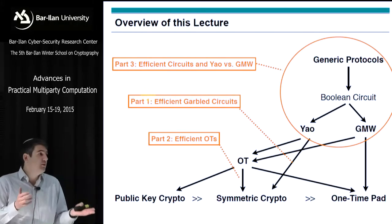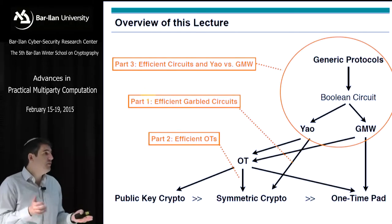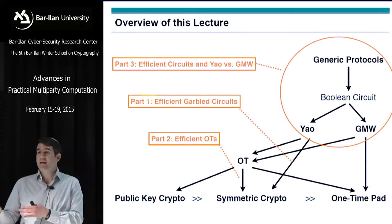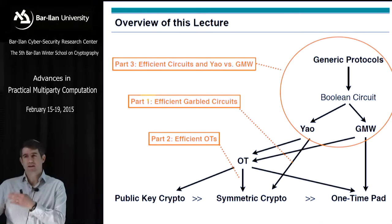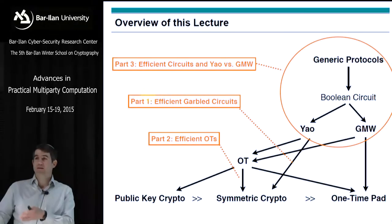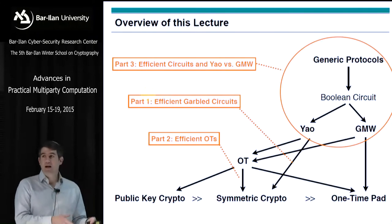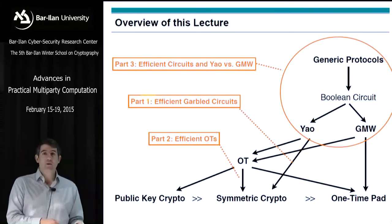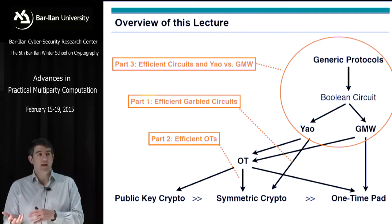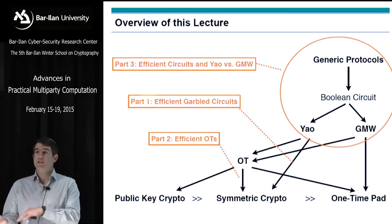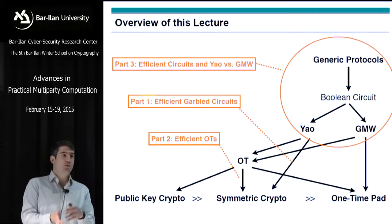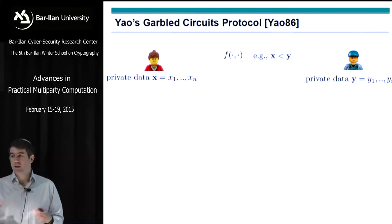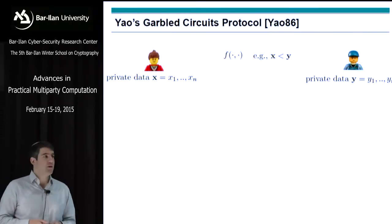This means there's a brand new problem: can you construct a circuit that minimizes the number of AND gates at the expense of more XOR gates? This is something engineers never looked at 30-40 years ago — they wanted to use NAND gates because they were cheaper to implement in hardware, not XOR gates. So it's a completely different problem and something we can collaborate with other communities on.